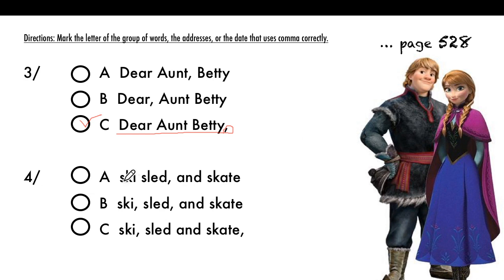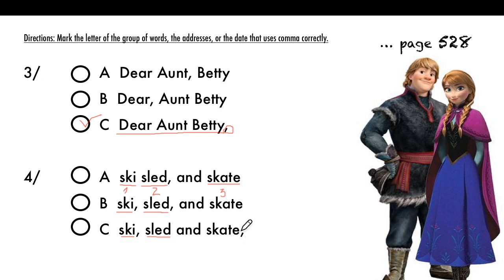Now we have words in the series: ski, sled, and skate. Ski is one thing, sled is the second, and skate is the third — things we use in the winter. With a group of words in a series, you put a comma after ski, a comma after sled, and no comma after 'and.' The middle option is correct: ski, sled, and skate — two commas, none after 'and.'